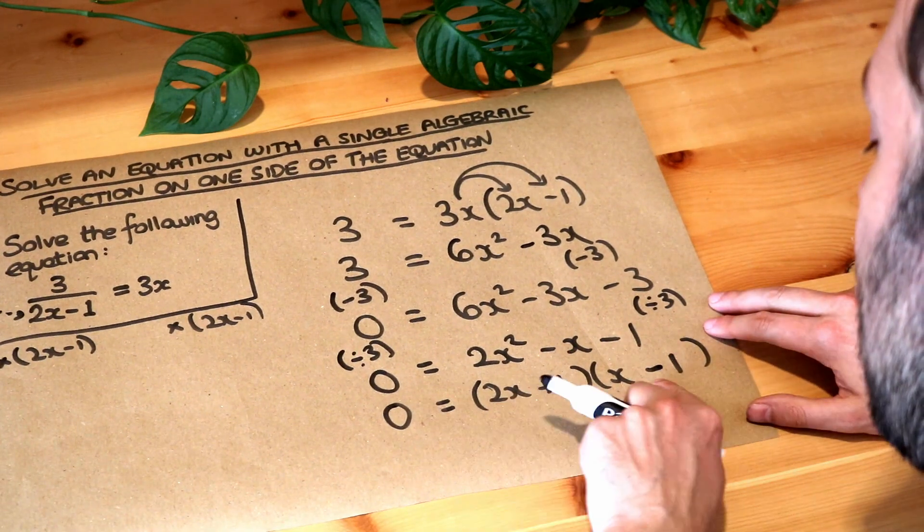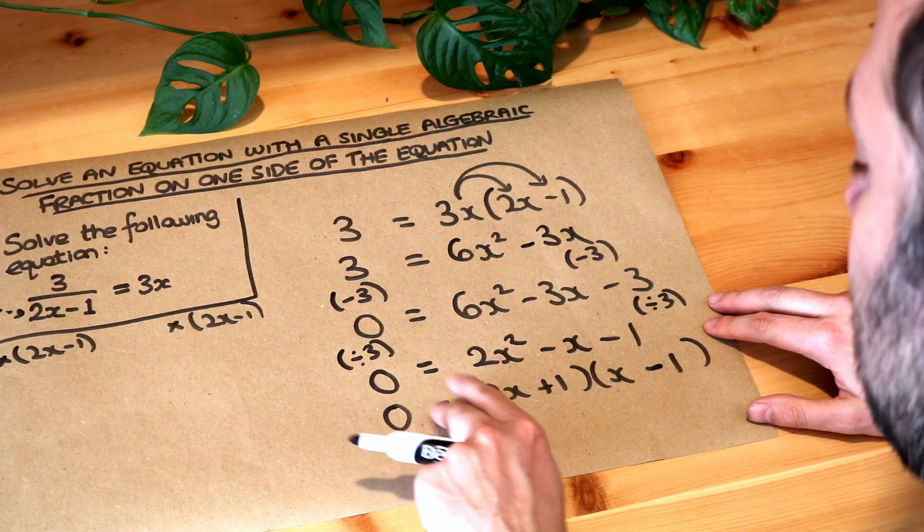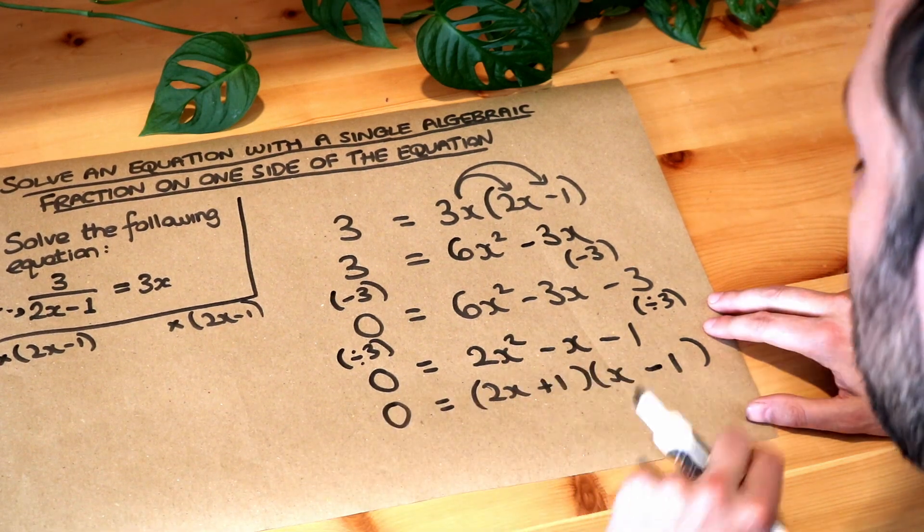Now once we've got that, we just make each of these brackets equal to 0, because if you've got a product of two things equal to 0, then we know at least one of them is 0.